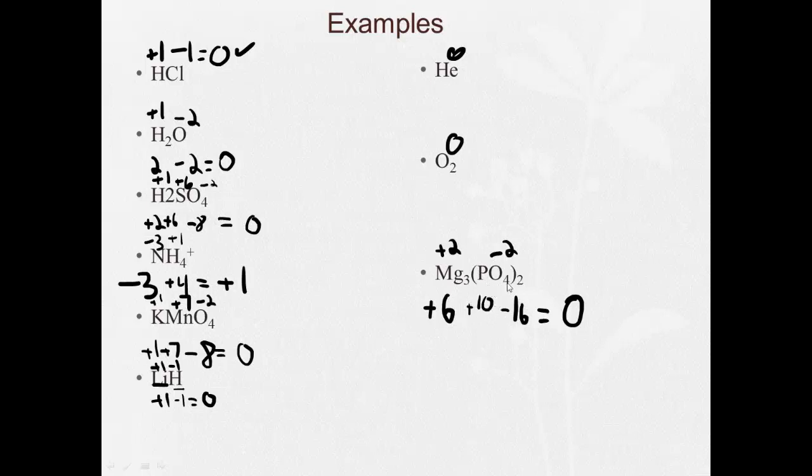There's two of them, one times two. So each one is plus five. So the oxidation state on the phosphorus is plus five, the oxygen minus two, and the magnesium is plus two. Nice and easy.